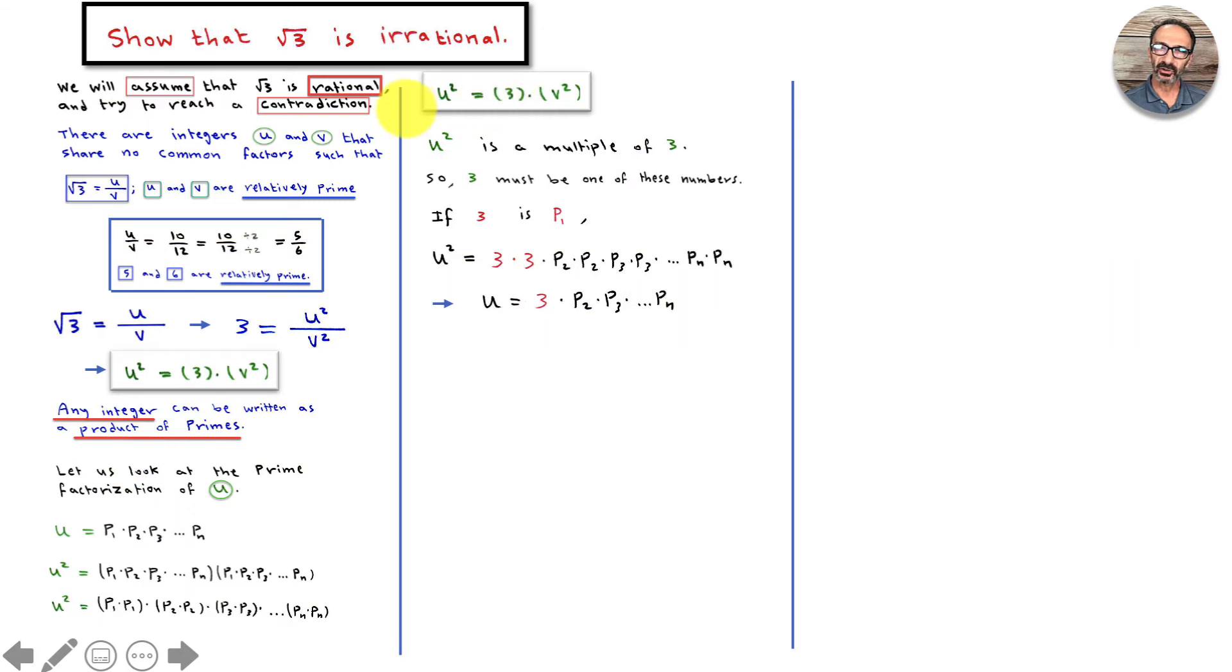3 is a factor of u squared, and we say that 3 is a factor of u. This might not be clear enough for students, so if you take the time and do it formally, you will see that 3 is also a multiple or a factor of u itself. Which means u is a multiple of 3.